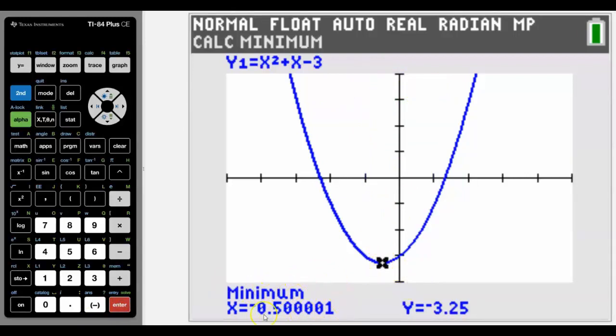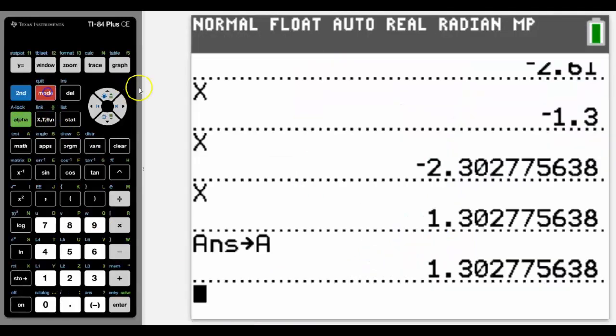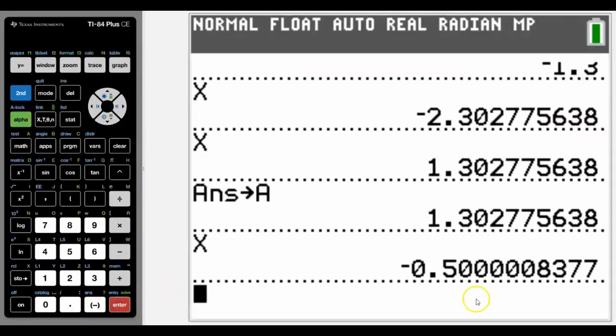We can see here that there's a bit of a rounding error happening on there, so I expect that it is negative 0.5, but that's where you just need to have a bit more understanding of the calculator and the calculations that it's using to find the minimum.